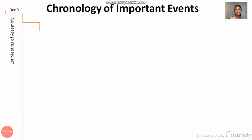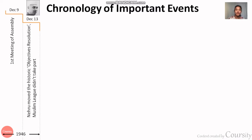What happened on 9th December 1946? That was the first meeting of the Constituent Assembly. After that, the Objective Resolution was passed by Nehru Ji. The Muslim League did not participate in the Constituent Assembly at that time.